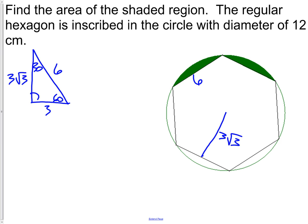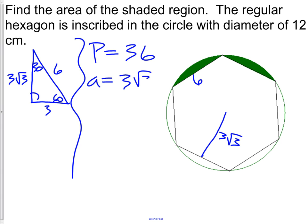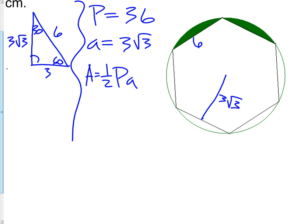Going back to the figure: the apothem is 3 root 3 and one side is 6, which helps us get the perimeter. Perimeter equals 6 times 6, which is 36. The apothem is 3 root 3. To find the area of the hexagon, we take one half of the perimeter times the apothem: one half of 36 times 3 root 3. One half of 36 is 18, times 3 is 54 root 3.